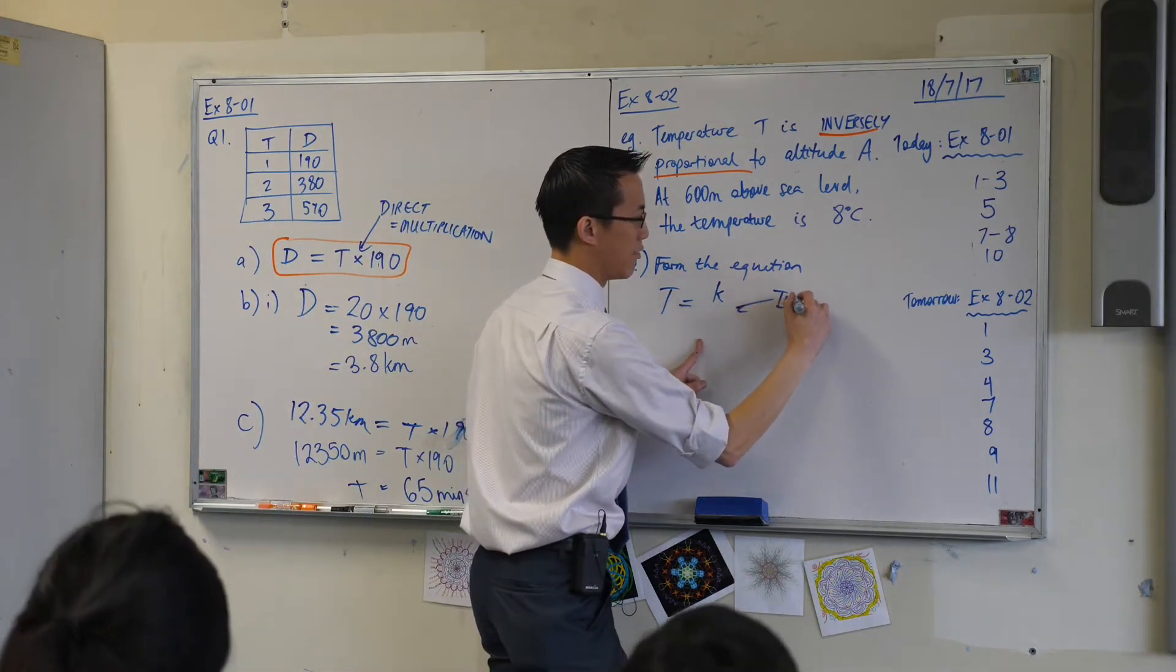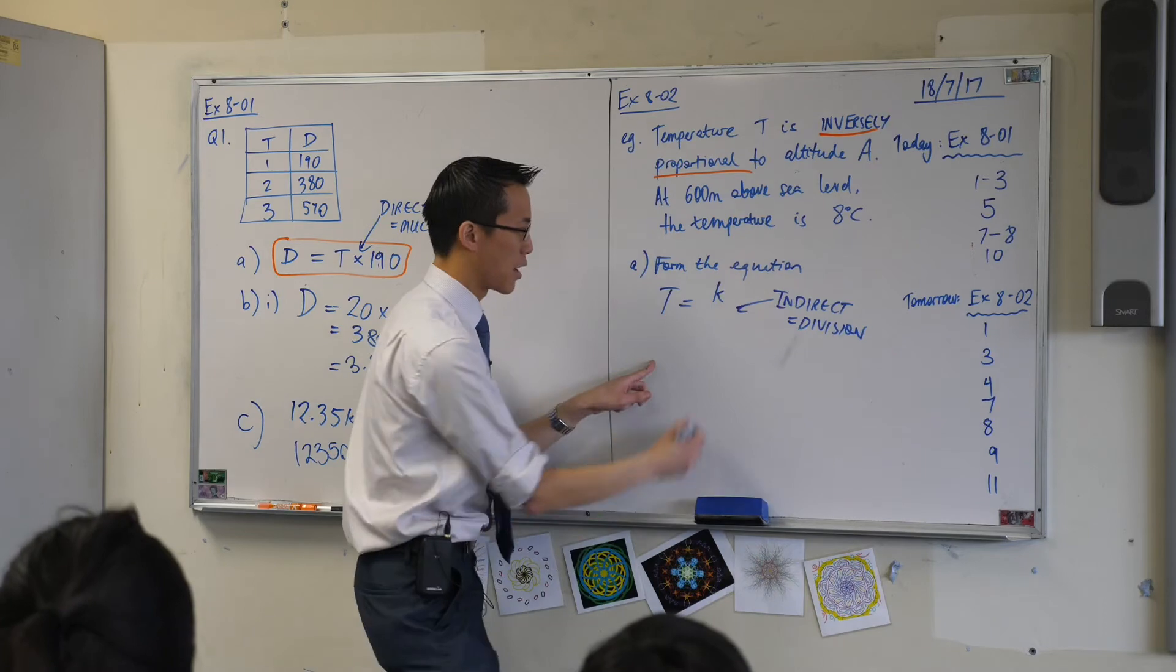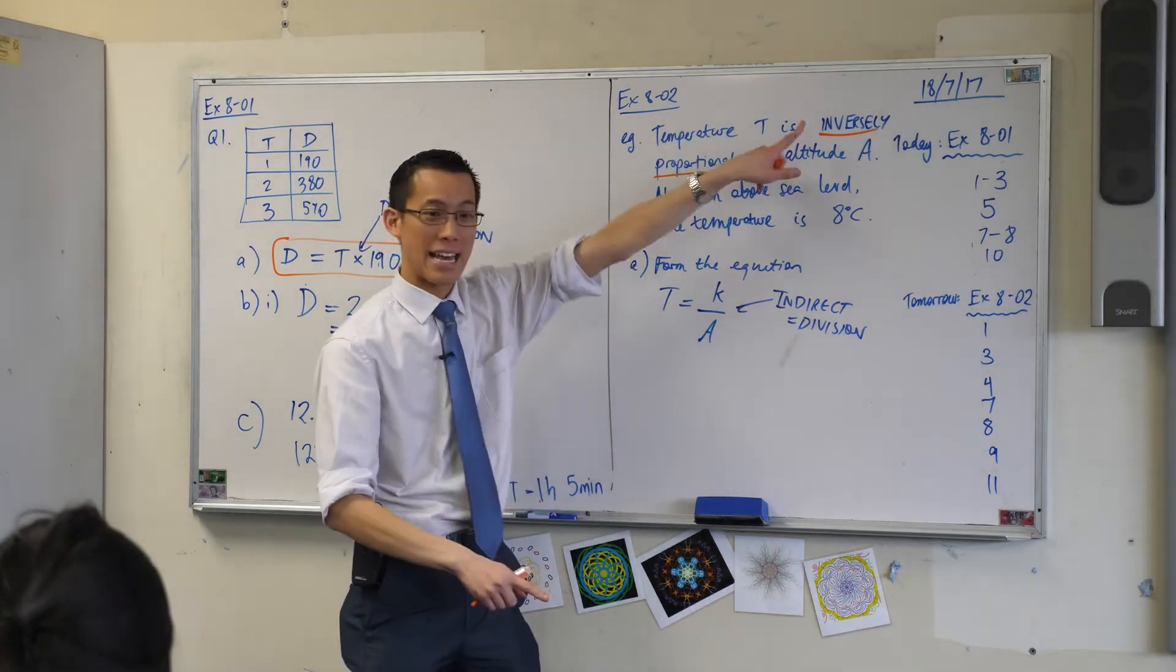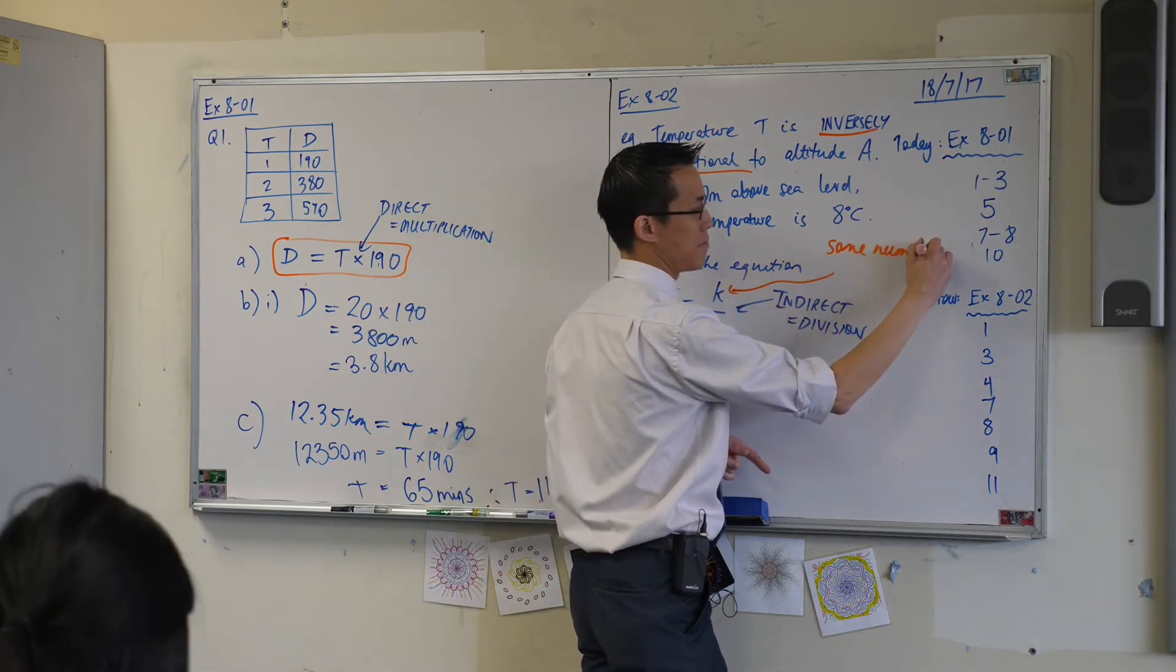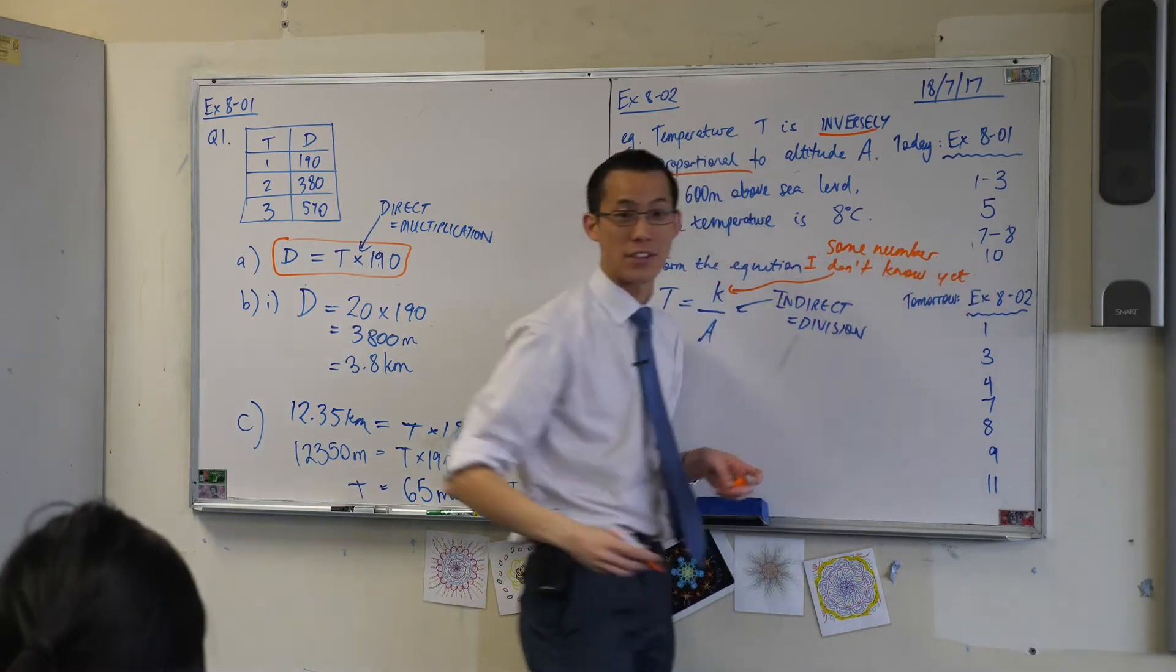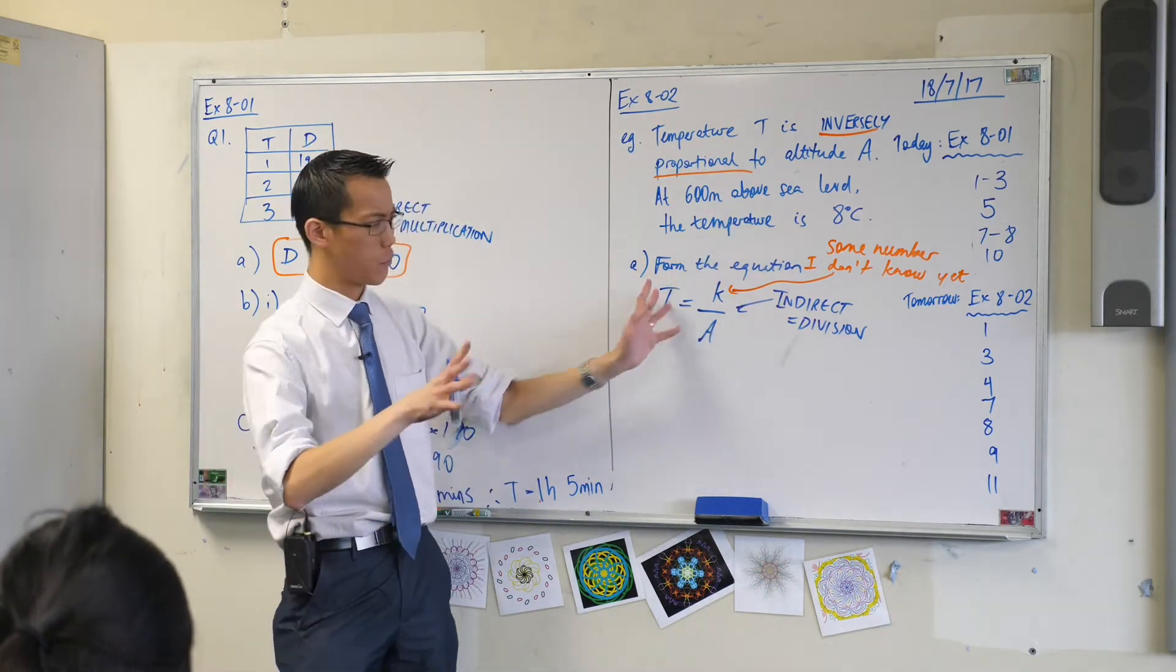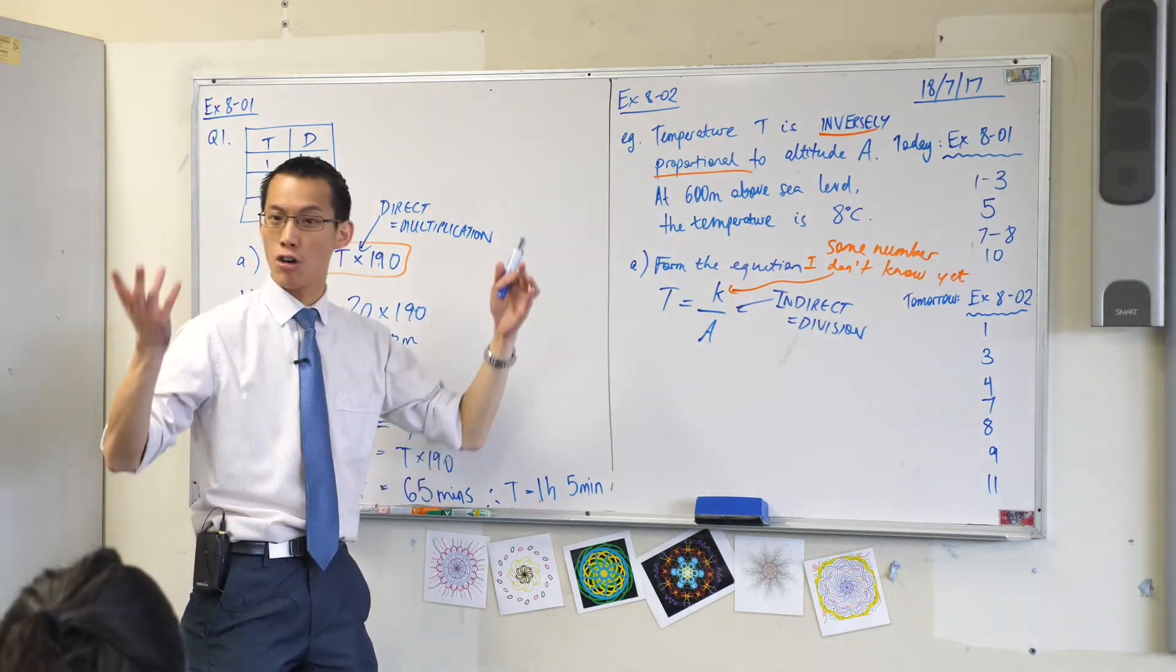Here for indirect or inverse, I'm going to do division which is the opposite. Right, so I'm going to divide by A. You might like to just put down over here - you know what T is, it's temperature. You know what A is, it's altitude. This K here is some number I don't know yet. So since I don't know what it is, I just give it a label and I'll come back to it.